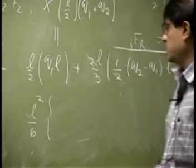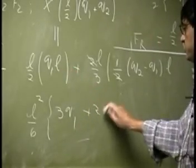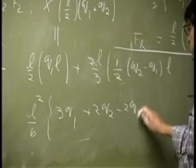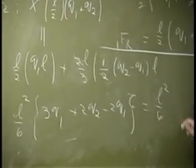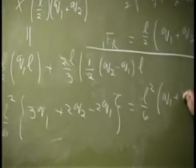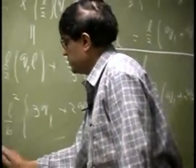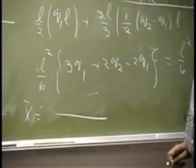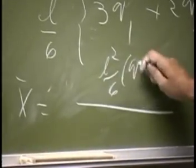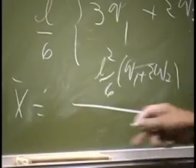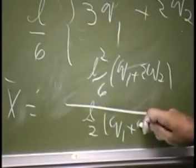If I do that, you are going to get 3Q1 as from here plus 2Q2 minus 2Q1. And, that is L square over 6. Then, we are going to have Q1 plus 2Q2 times X bar. Equation we are looking for will be L square over 6 times Q1 plus 2Q2. And, then you have L over 2 times Q1 plus Q2.